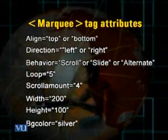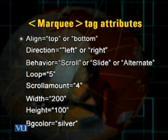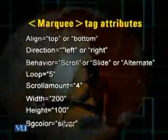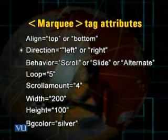One is the 'align' attribute with values 'top' or 'bottom'. If we keep align as 'bottom', the scrolling text is aligned with the bottom of the surrounding text. If 'top', it aligns with the top of the surrounding text. Another attribute is 'direction' with values 'right' or 'left'. By default, text scrolls from right towards left. By using the direction attribute, we can fix a different value — if we keep its value as 'left', the text scrolls from left to right.